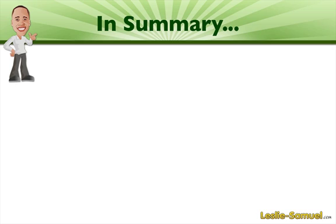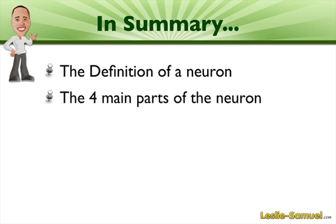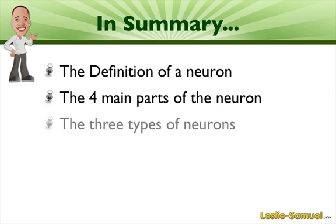To recap on what we've discussed in this video: first we dealt with the definition of a neuron, secondly I spoke about the four main parts of a neuron, and lastly I spoke about the three types of neurons. That's it for today's episode. I'll see you on the next one.